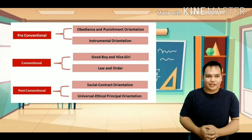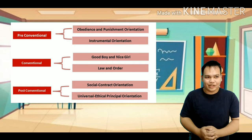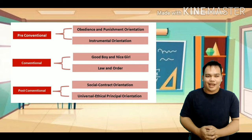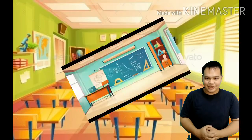The last level is the post-conventional level. A person's sense of morality is defined in terms of more abstract principles and values. People at this level may believe that some rules are unjust and should be changed or eliminated.